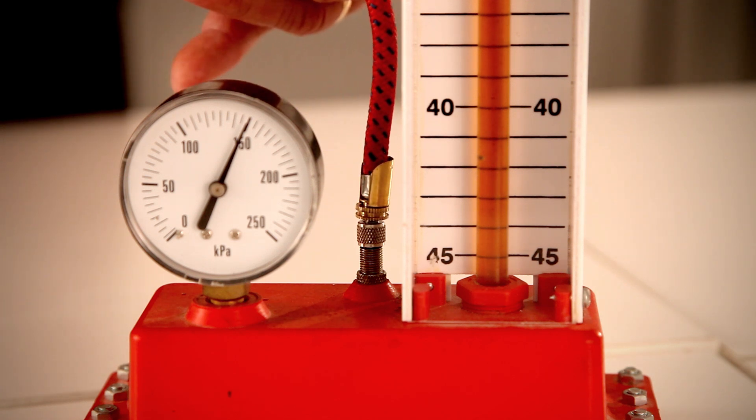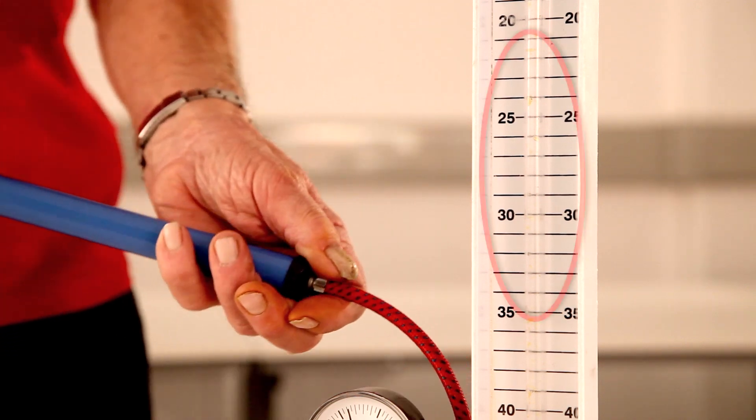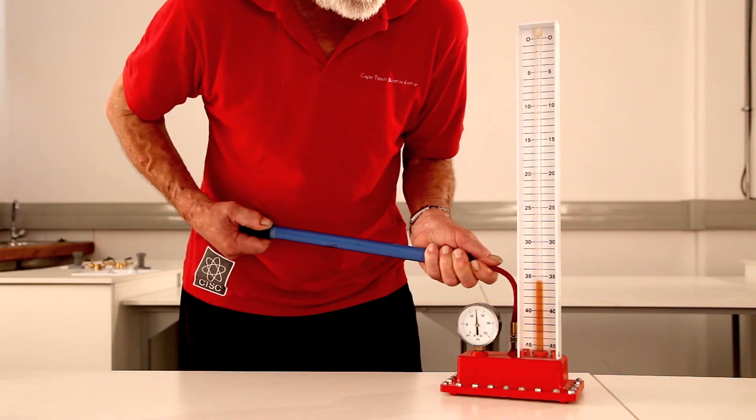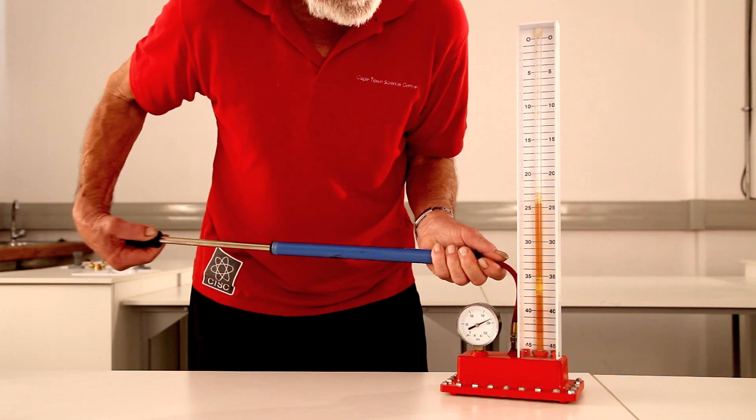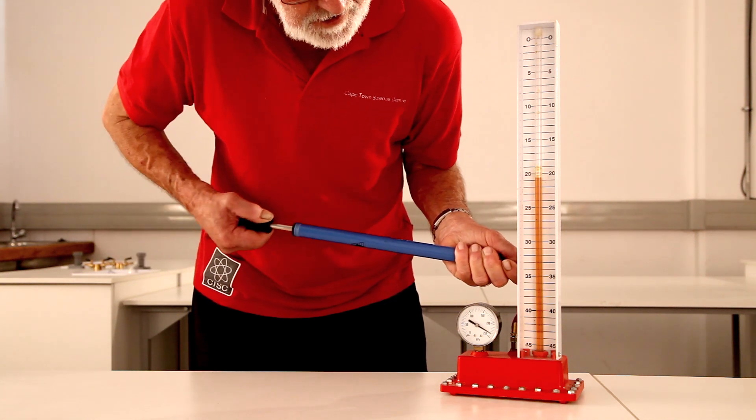By applying pressure on the oil in the oil bath, we exert a pressure on the air in the air column above the oil bath. The greater the pressure, the smaller the volume will become.